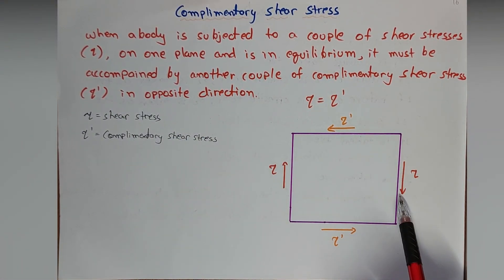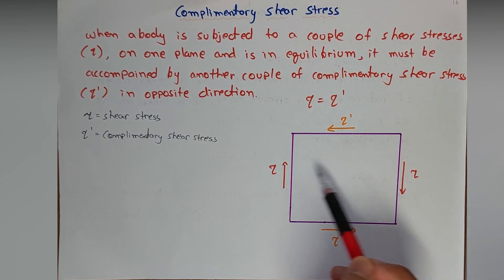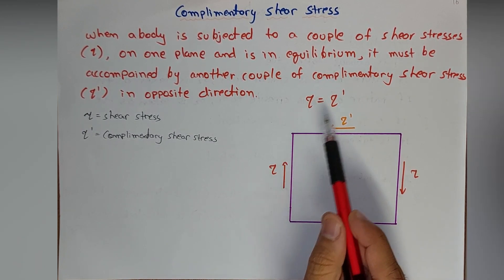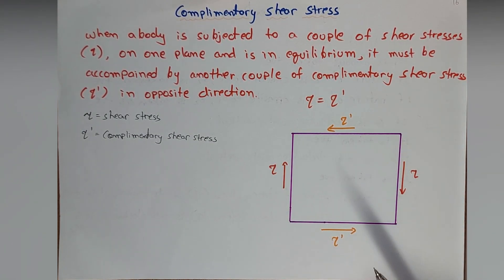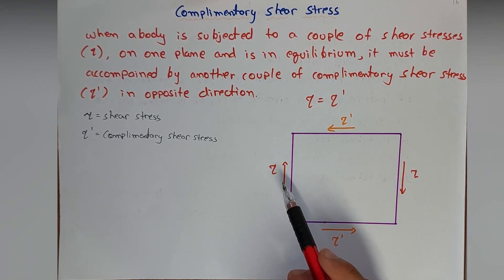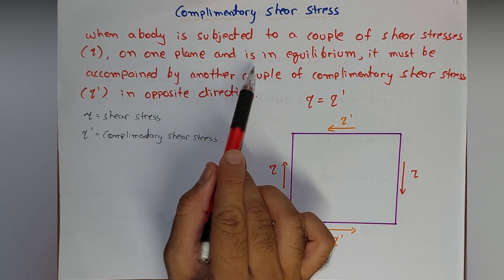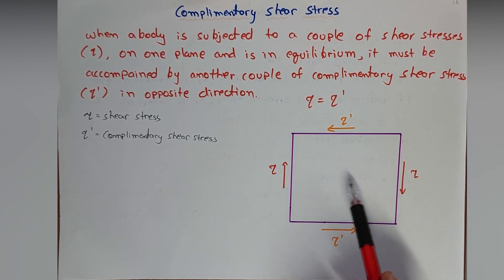This is a couple of shear stresses, opposite and equal. Now it is clockwise but we are not concerned with whether it may be clockwise or anticlockwise. It is a couple, equal and opposite direction, shear stress tau on one plane and is in equilibrium. If this body is in equilibrium, that is if it is stable...